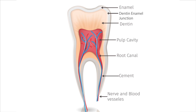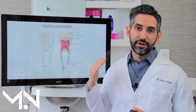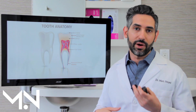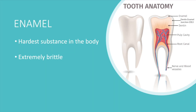The tooth has numerous layers. We're going to drill in on the four main layers of the tooth. As you look here, we have enamel, we have the DEJ up top, then we have dentin and the pulp cavity. We're going to go through each of those one by one so you can understand the basic function of them and why they're so important to how the tooth works overall.